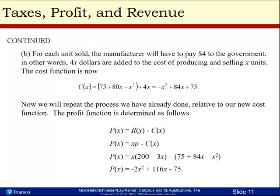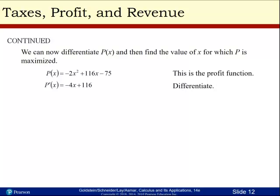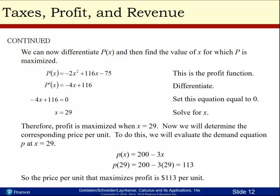We need to maximize profits. So we're going to take the derivative and set it equal to zero. We get that the derivative is negative 4x plus 116. We need to solve this for x, and we get that x is 29. Therefore, profit is maximized when x is 29. We're going to determine the corresponding price per unit. To do this, we're just going to plug this into the demand equation for x equals 29. P of x equals 200 minus 3x. Plug in your 29, and we get that P of 29 is 113. This means that the price per unit that maximizes profit is $113.